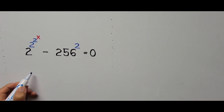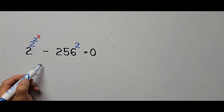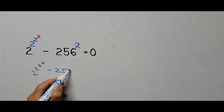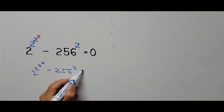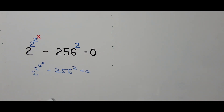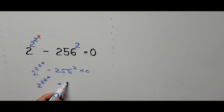Now let's start solving. We write down the equation again: 2 to the power of 2 to the power of 2 to the power of x, minus 256 to the power of 2, equals 0. The first step is to transpose the constant to the right side, so this becomes 2 to the power of 2 to the power of 2 to the power of x equals 256 squared.